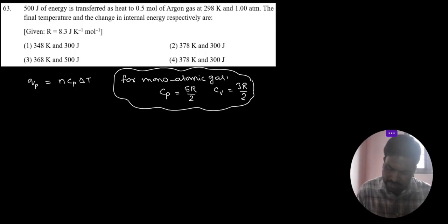So Qp equal to n Cp delta T. n is 0.5 mol means 1 by 2 mol into Cp value for argon gas, monoatomic gas 5R by 2, into delta T. Delta T means final temperature minus initial temperature 298 Kelvin.